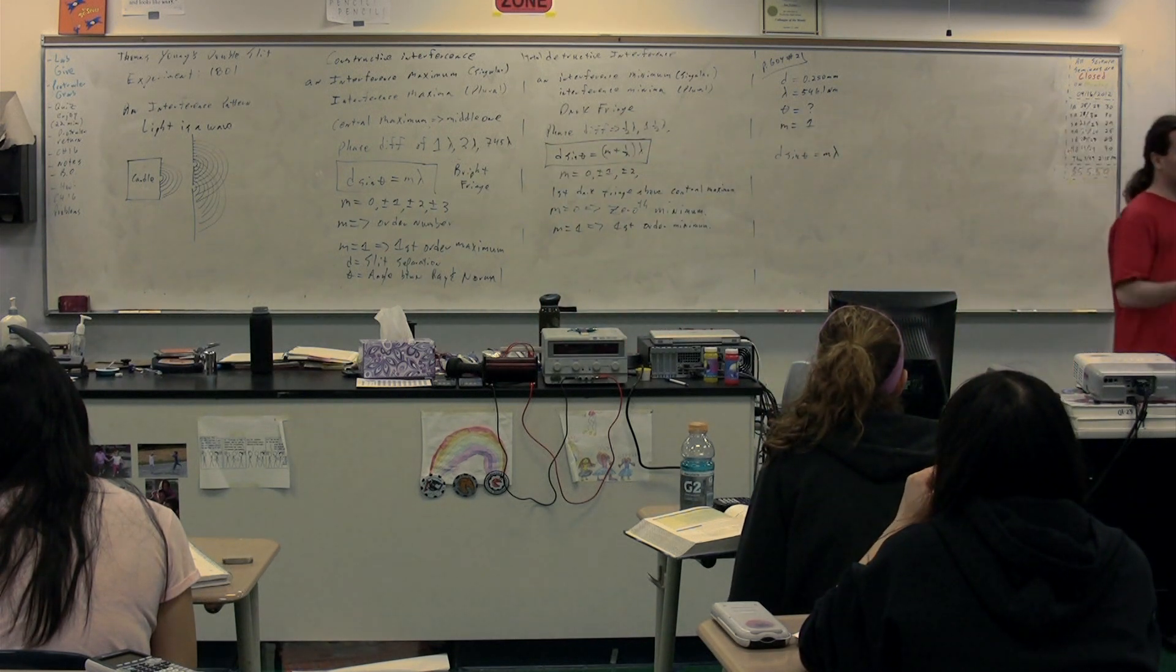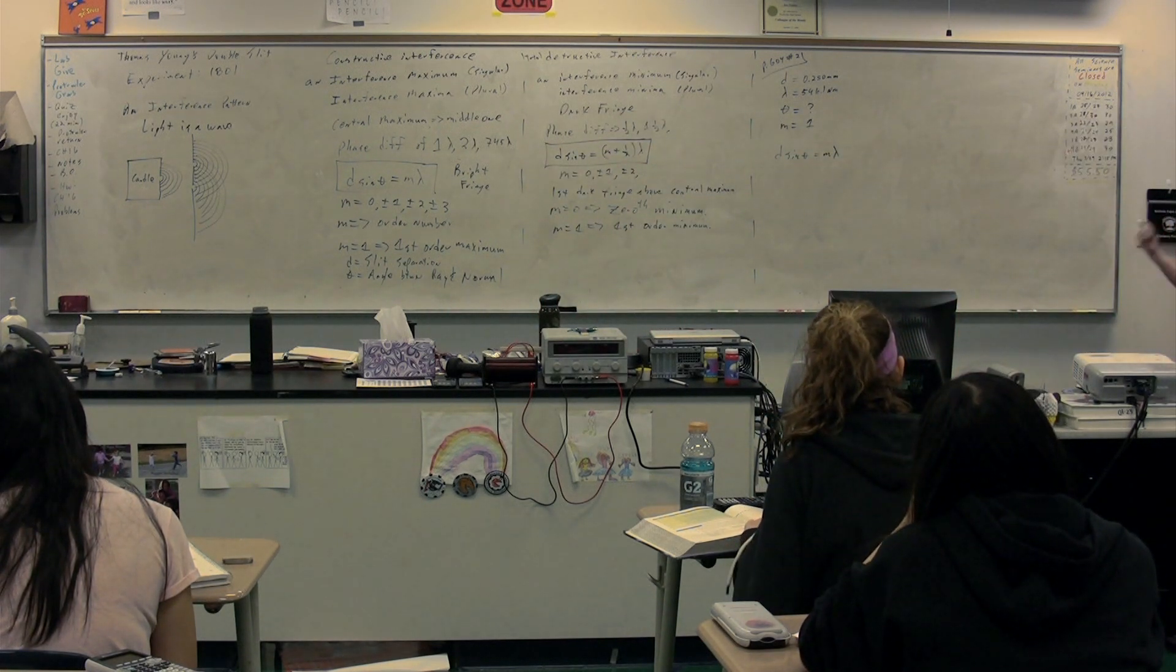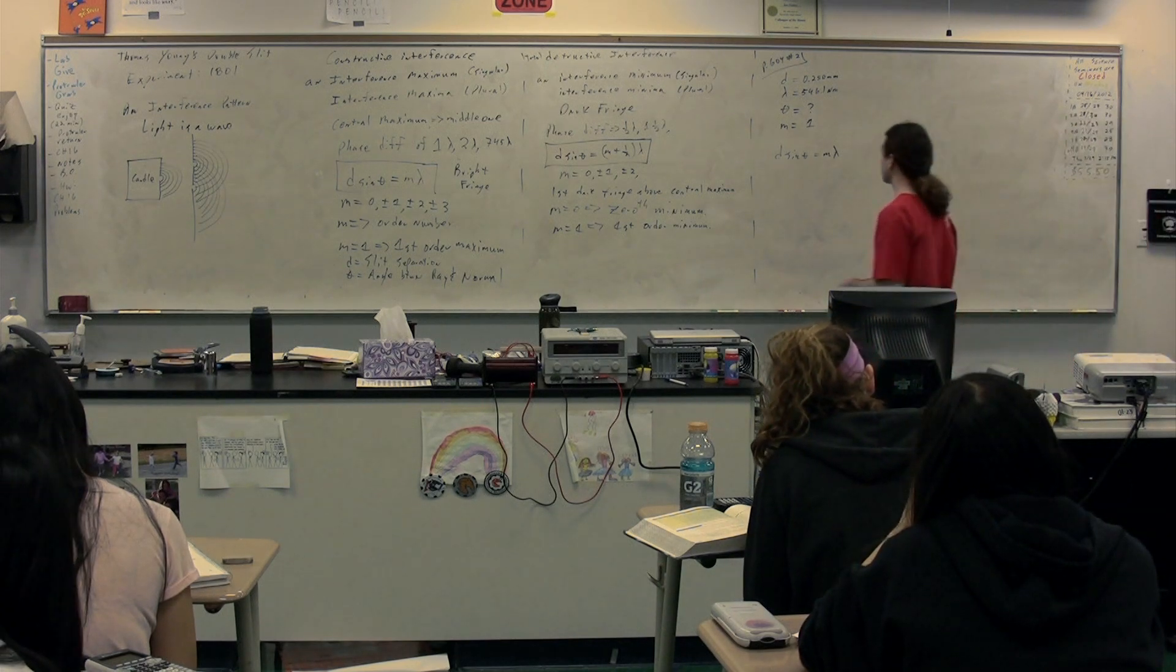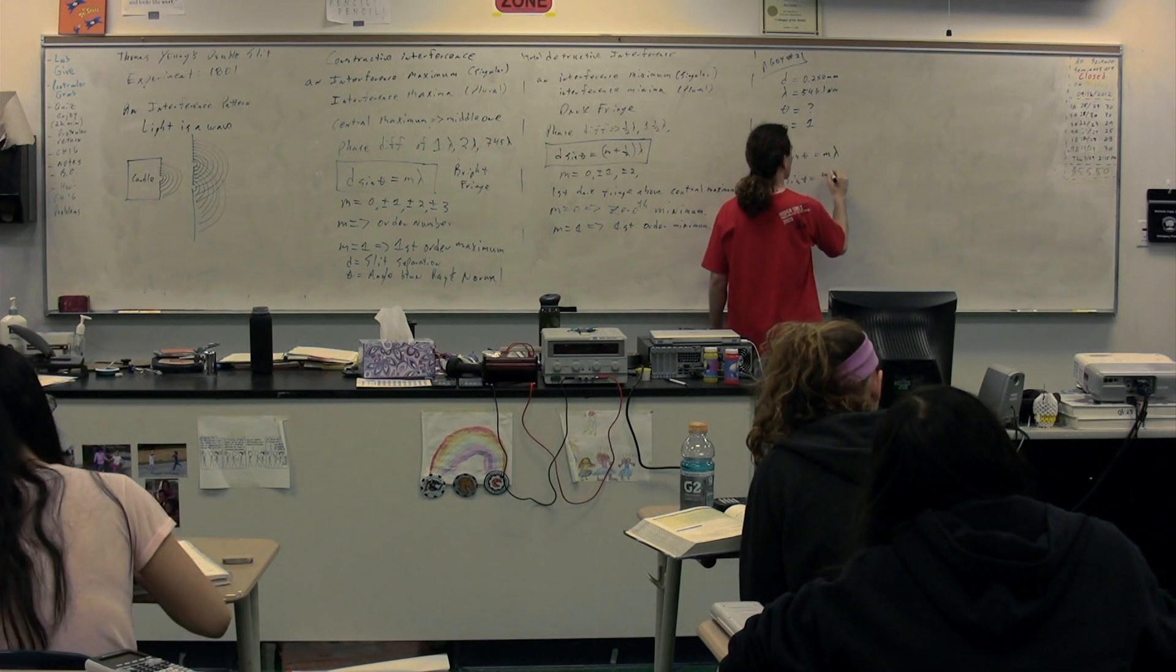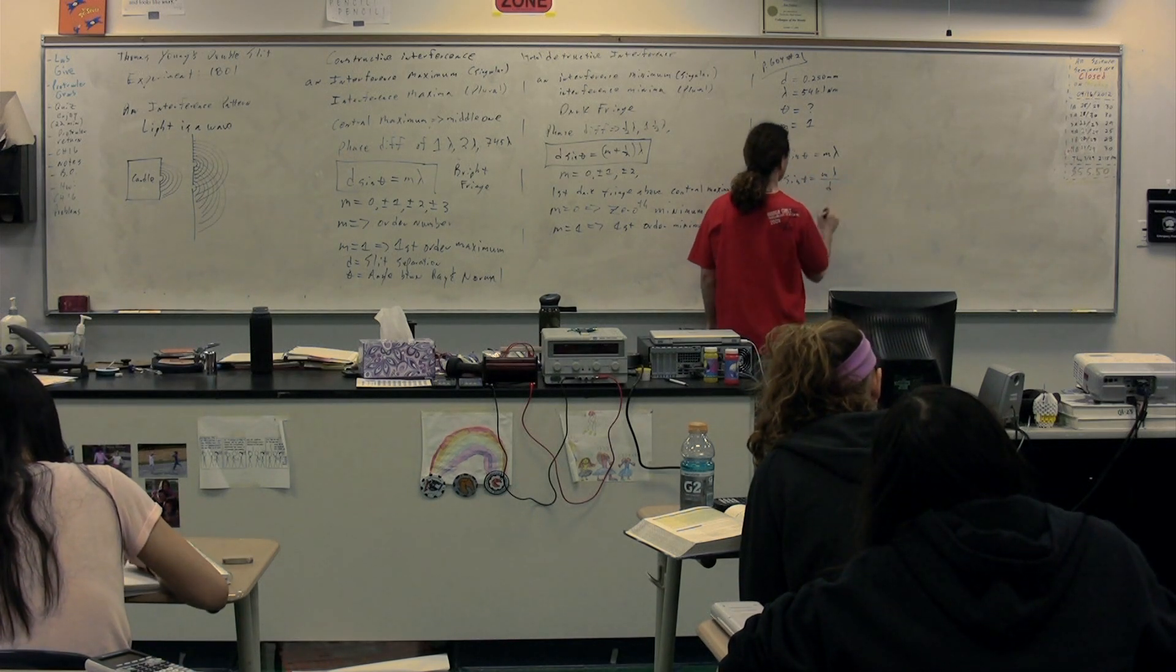Because we're talking about a bright fringe, which is constructive interference, this is the equation for a bright fringe for constructive interference. We have all the information, we just need to rearrange it. Sine of theta equals the order number times the wavelength divided by the slit separation.